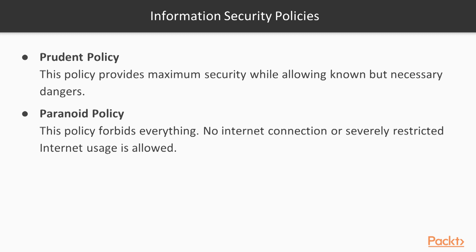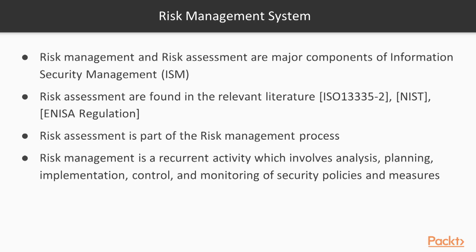Prudent policy provides maximum security while allowing known but necessary dangerous services. Paranoid policy does not provide any facility like internet connections, and other users are not allowed. Promiscuous and paranoid policies are not practical; they are more theoretical. Permissive and prudent policies can be implemented in companies.